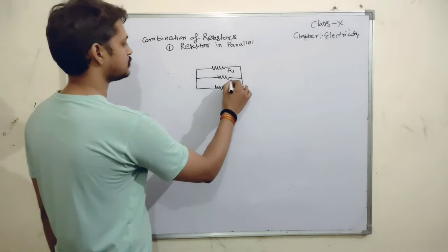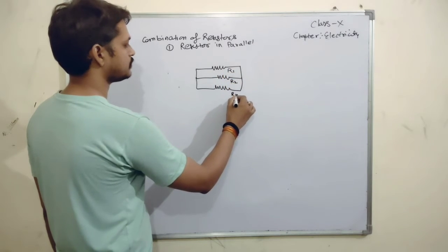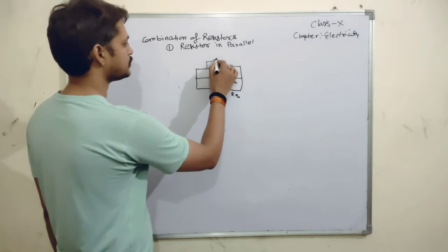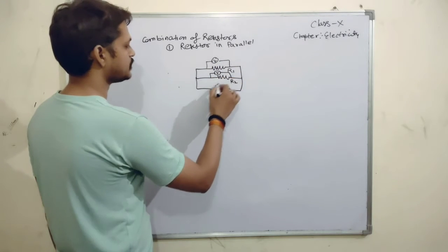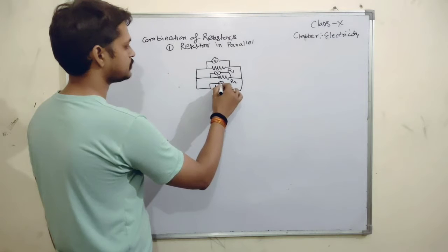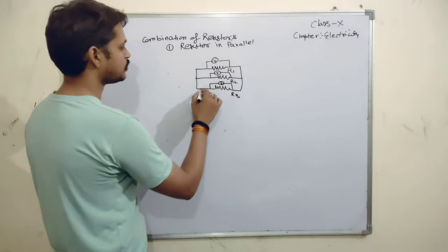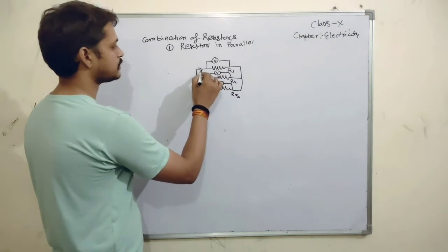Say this one is R1, this one is R2, this one is R3. All will have same potential V. If the potential is same, what will be the different? What is different is called as current.